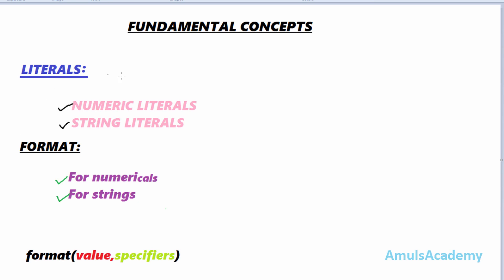First we will see what are literals. Literals are nothing but one or more characters which will stand for itself. For example, values 5, 10, 15, 4.5 etc. — these are the values which will stand for itself, so these are called as literals. In literals there are two types: one is numeric literals and another is string literals.